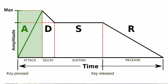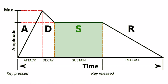It generates a voltage shape. The attack informs the module how quickly that shape reaches its maximum voltage. The decay indicates how quickly after that it reaches the sustain level. The sustain level means the signal stays at that level until you release — in the case of a synthesizer, until you release the key you're pressing. After that, the release takes over and informs how long that signal fades down to zero.